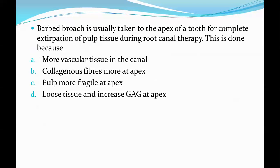Next question: a barbed broach is usually taken to the apex of a tooth for complete extirpation of pulp tissue during root canal therapy. This is done because — options: A) more vascular tissue in the canal, B) collagenous fibers are more at the apex, C) pulp is more fragile at the apex, D) loose tissue and increased gap at the apex. The correct answer is Option B, collagenous fibers are more at the apex.